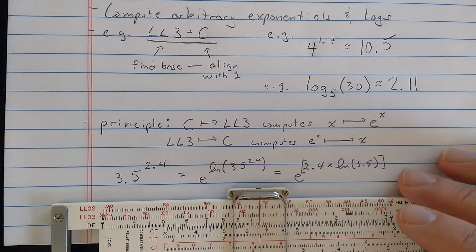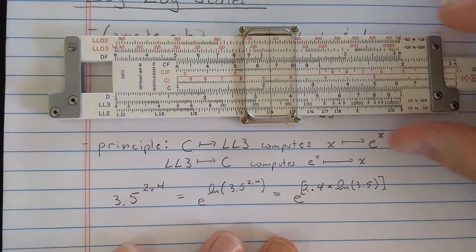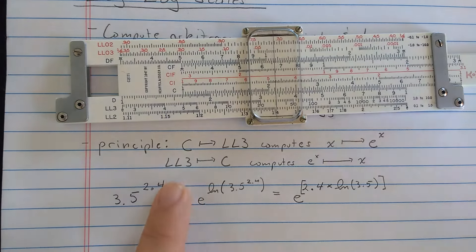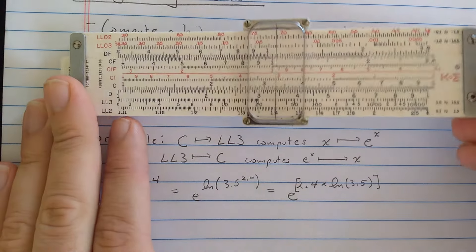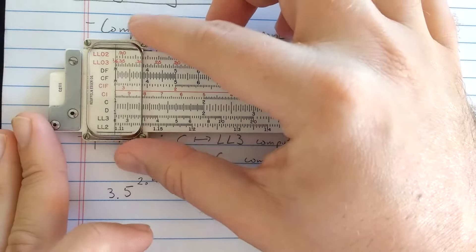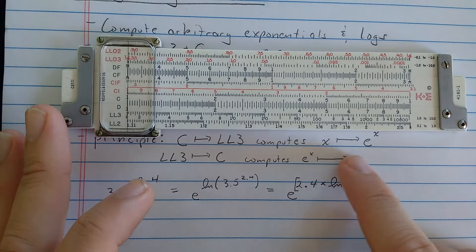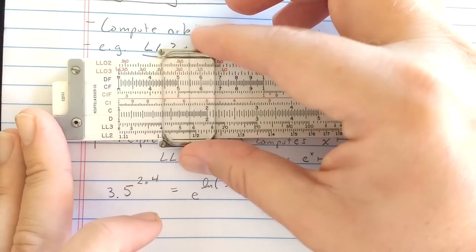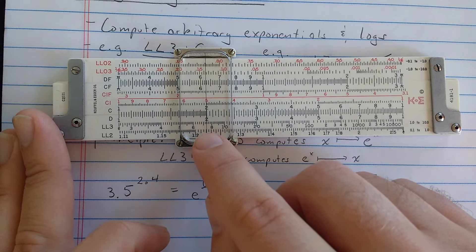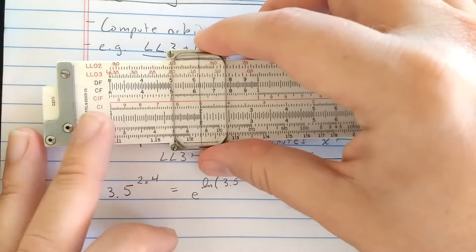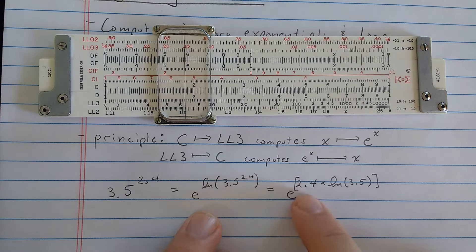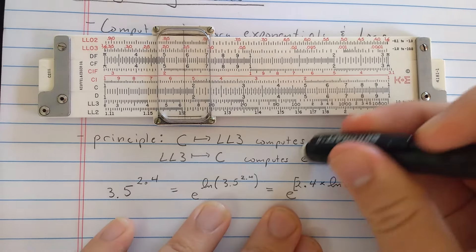How does this work? Well, the principle is that going from the C scale to the log-log-3 scale actually computes natural exponential e to the x. So if I'm at 1 here on the C or the D scale, you can see the log-log-3 scale is reading e, because e to the 1, right, is e. e squared here, 7.4 or so, e squared, right, so just reading between D and LL3, it computes e to the x. Of course, doing that in reverse and reading log-log-3 to D, you compute natural log. So reading from log-log-3 to C, if x is appearing on log-log-3, then you read the natural log of x on the C scale or the D scale.